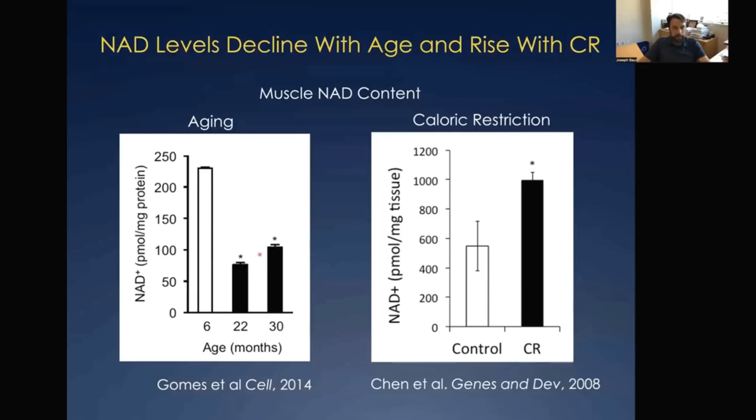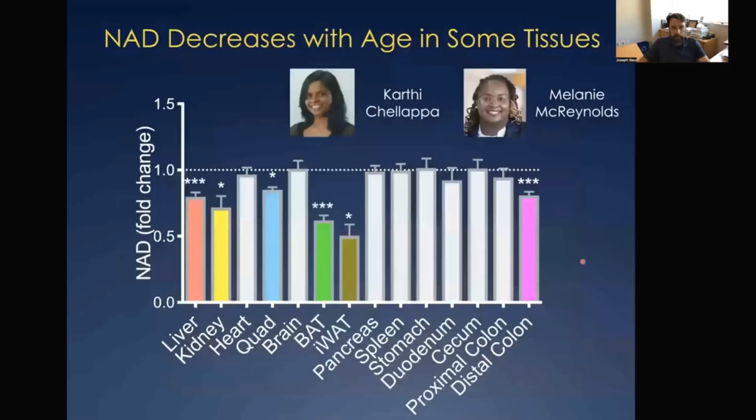This is skeletal muscle NAD content in mice of different ages — six months on the left, or 22 to 30 months, which are much older mice near the end of their lifespan. You can see skeletal muscle NAD content falls pretty dramatically with age. On the right, if you calorie restrict and then look at aged calorie-restricted animals versus controls, that intervention is restoring the muscle NAD content. We see the same thing with exercise — there's a general correlation between tissue NAD content and interventions that promote health and longevity.